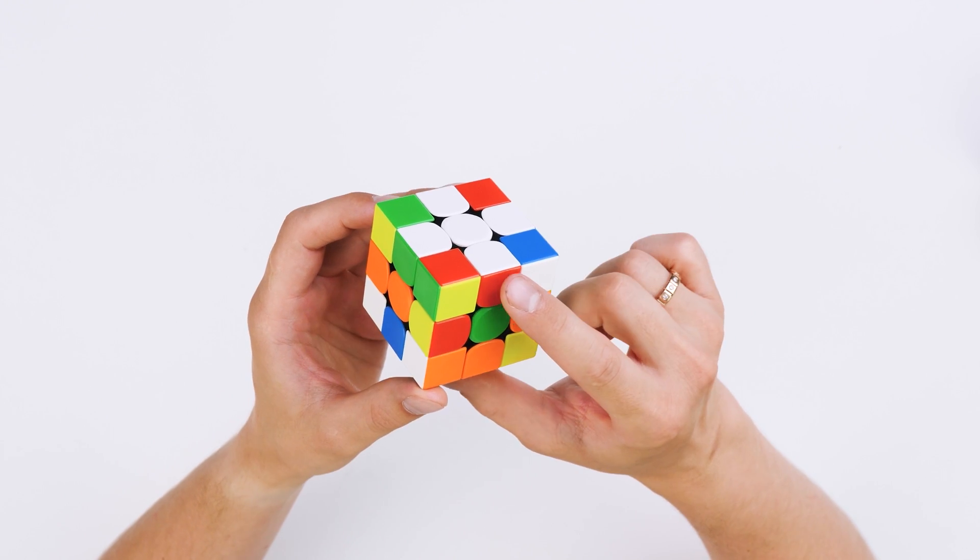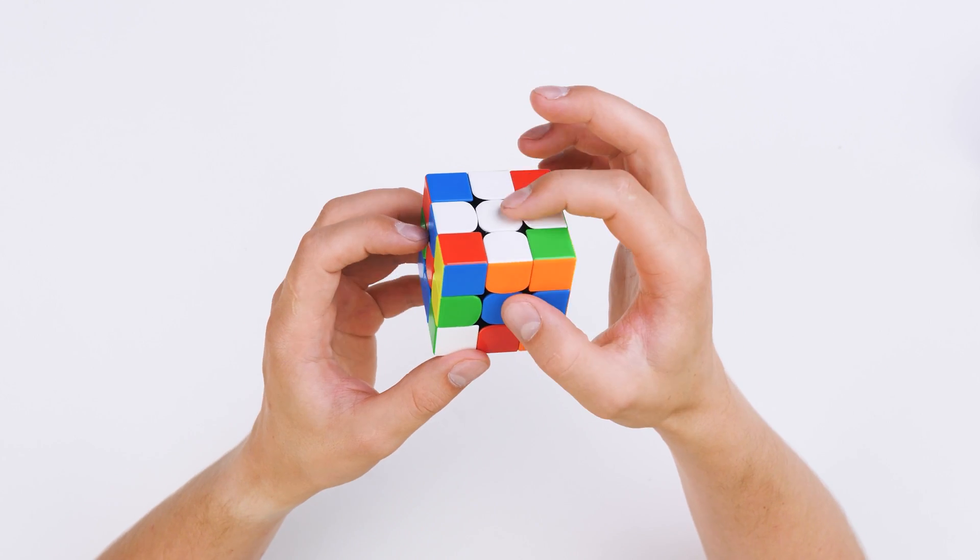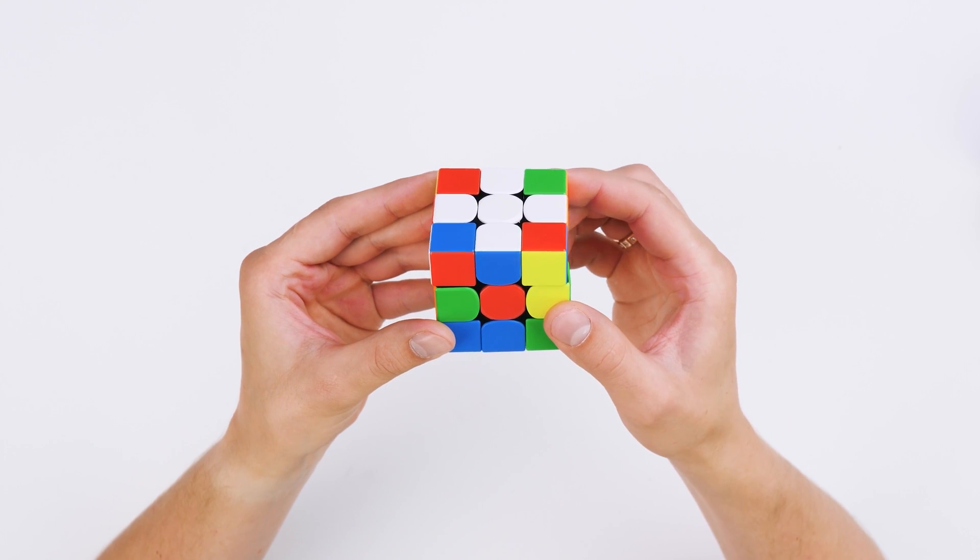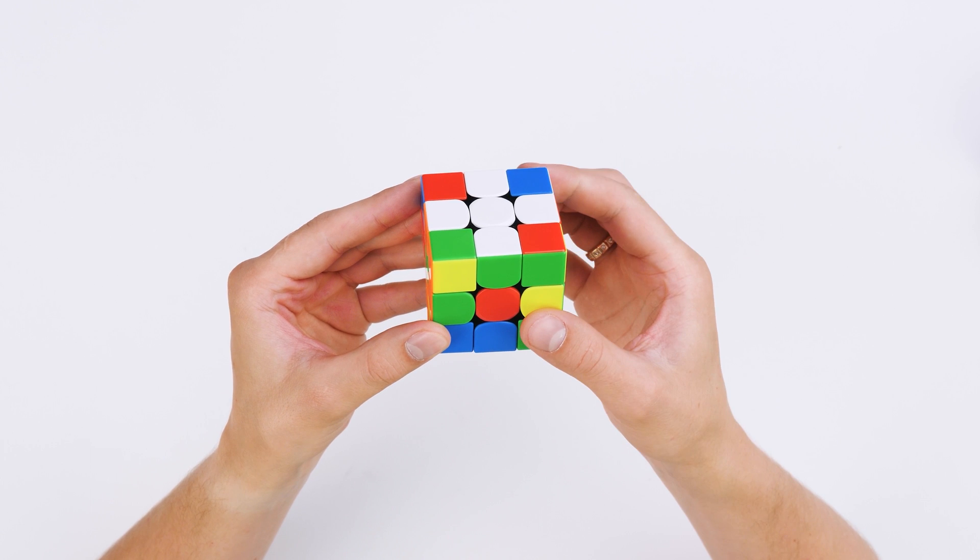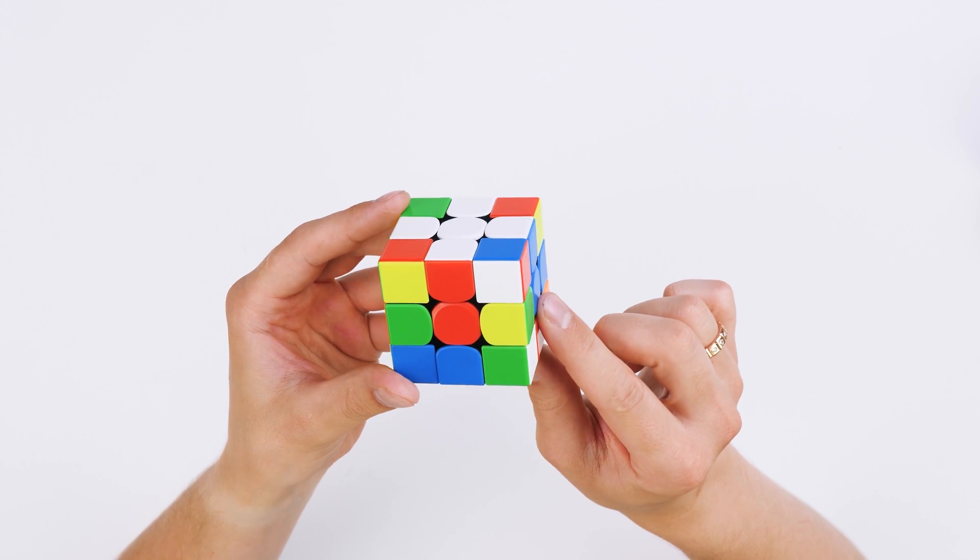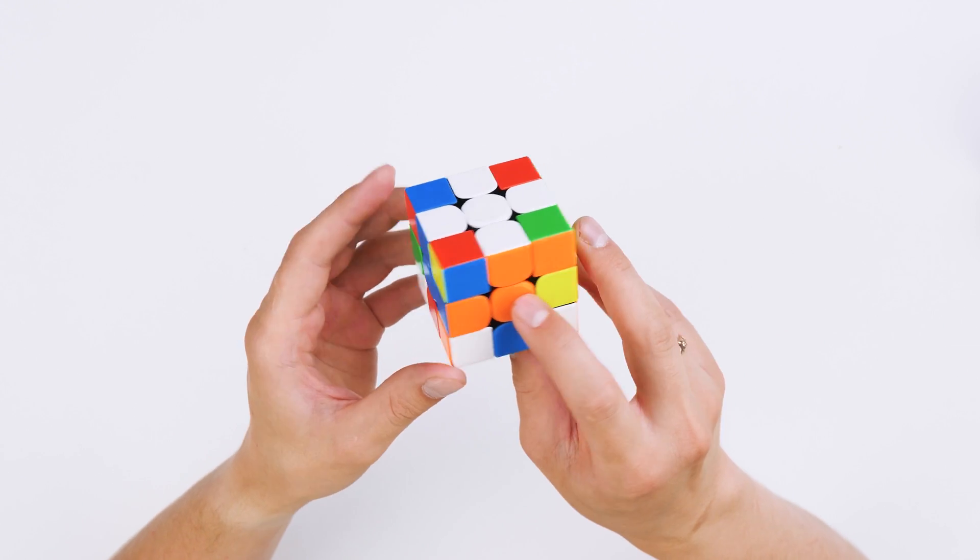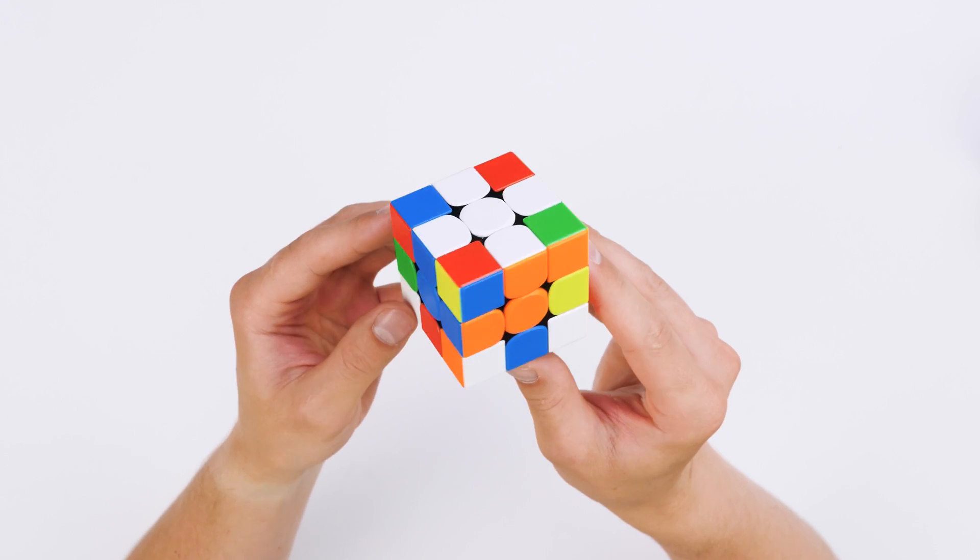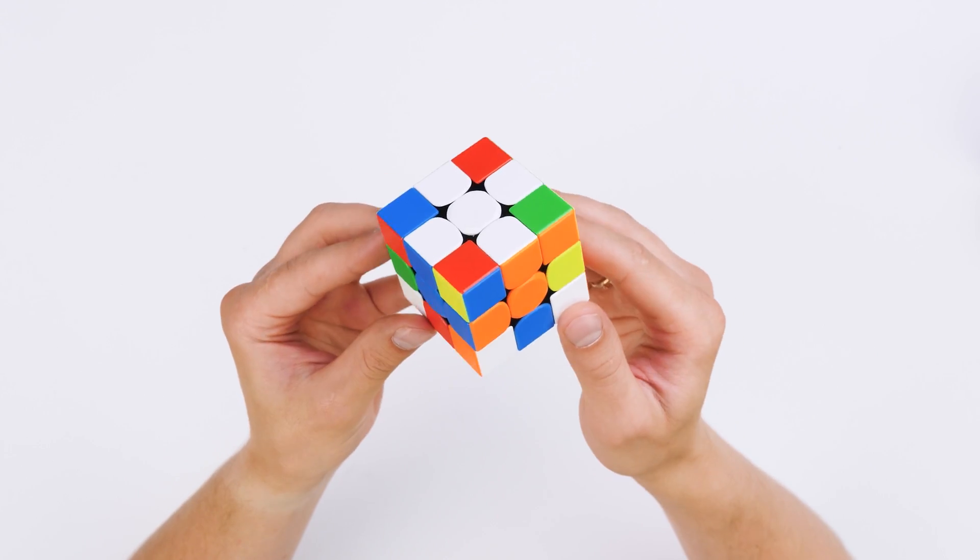We reviewed all situations and now our cross is solved. But remember, we have to make it right by combining all edges in color with adjacent centers. To do this, you just need to turn the top face until we combine as many parts as possible. There may be a situation when we have at some point all parts of the cross in place. Only in this case the cross is considered correct and on this we finish this stage.